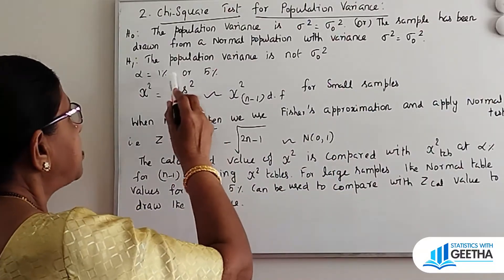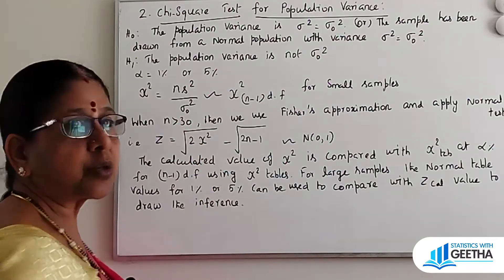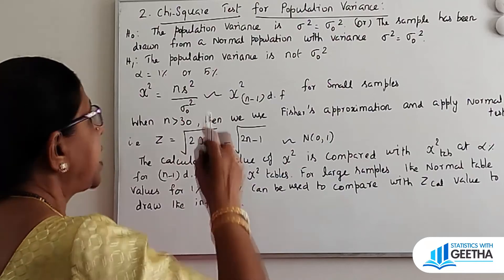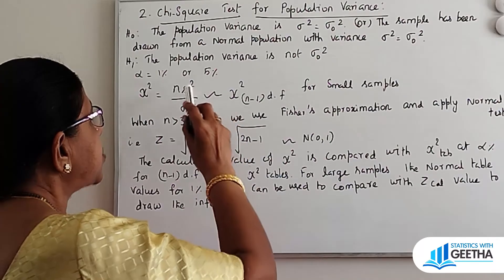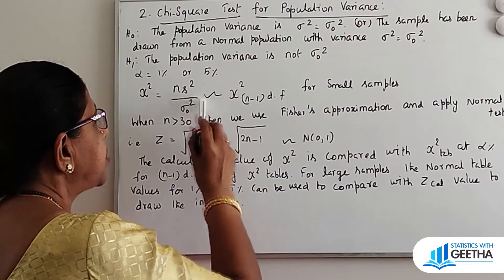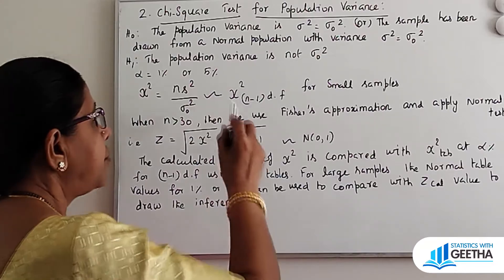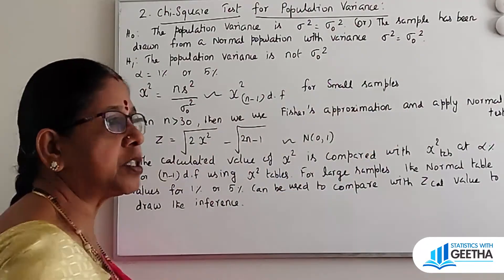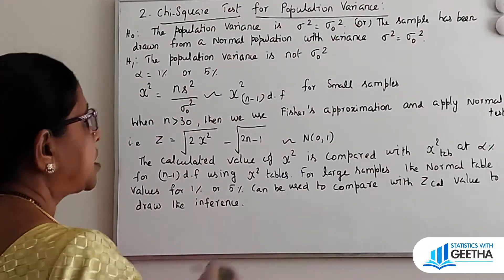Alpha may be 1% or 5%. The calculated chi-square is given by the formula NS square by sigma naught square, where N denotes the sample size, S square denotes the sample variance, and sigma naught square is the given population variance. This follows chi-square with N minus 1 degrees of freedom for small samples, that is N less than or equal to 30.